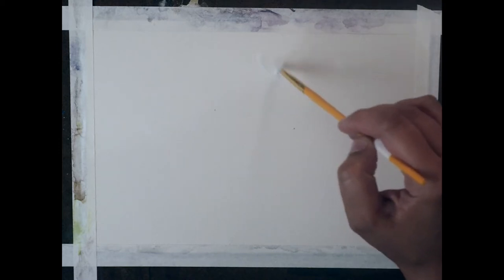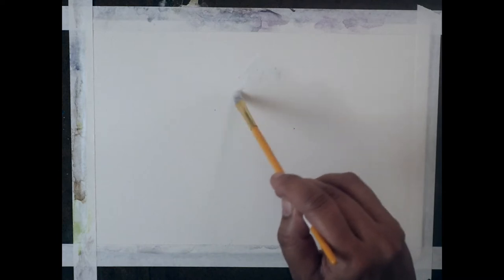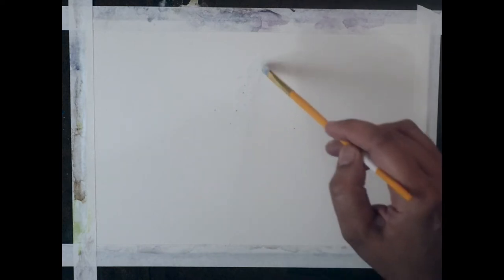You put the masking fluid on, it dries, and then you paint over it. Then you are going to remove the masking fluid afterwards and all the areas where it was are left untouched and crisp white because it is the paper underneath.